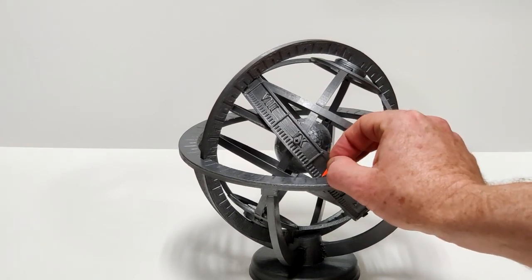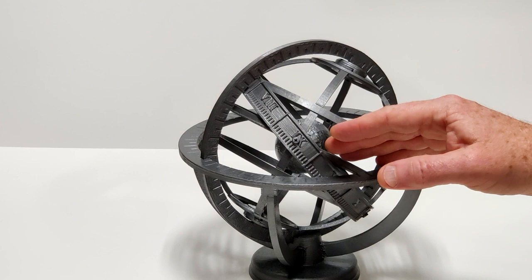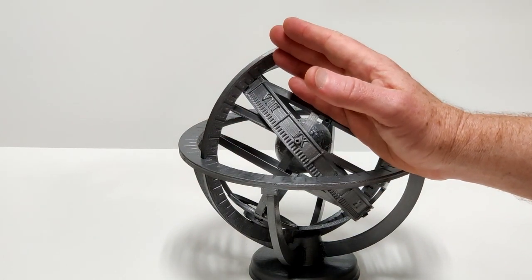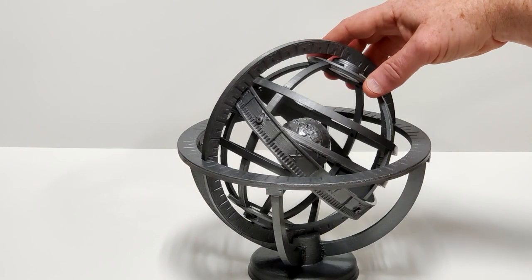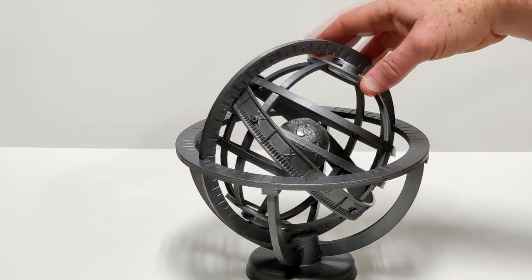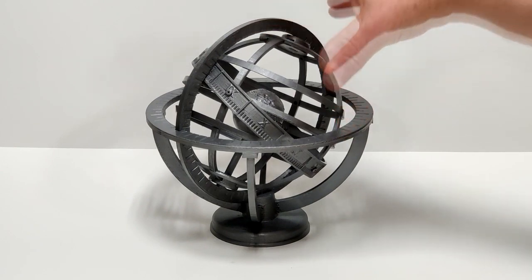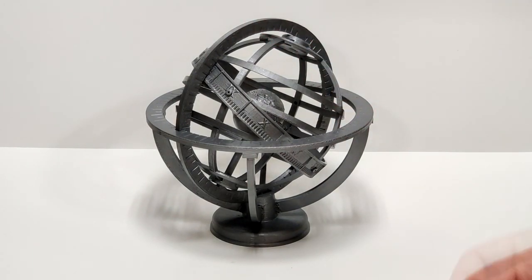So in addition to telling you how high in the sky the sun's going to get or other celestial bodies and telling you where it's going to rise and set, you can also use an armillary sphere to calculate what time an object is going to rise and set at least relative to local solar noon.